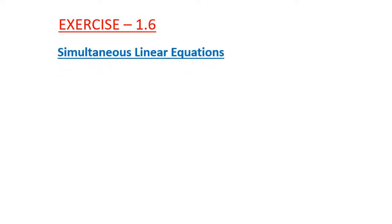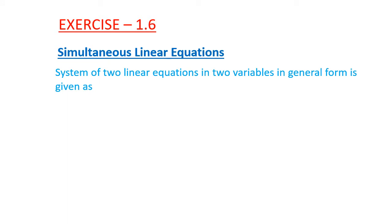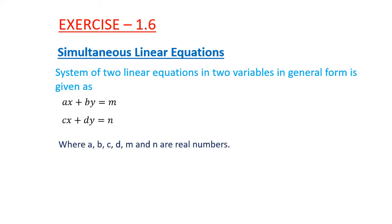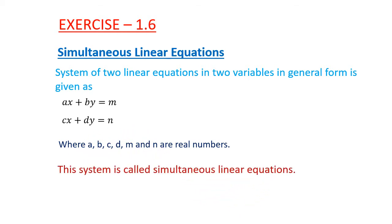Before starting this exercise, we should know the definition of simultaneous linear equations. A system of two linear equations in two variables in general form is given as ax plus by is equal to m, and cx plus dy is equal to n, where a, b, c, d, m and n are real numbers. This system is called simultaneous linear equations.